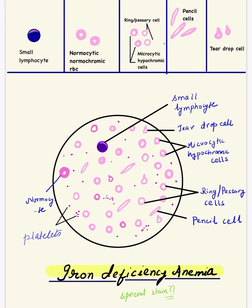This is how we draw the diagram of iron deficiency anemia on a peripheral blood smear. One special stain used to demonstrate the absence of iron stores in the bone marrow is the Perls Prussian blue stain. This stain will demonstrate the absence of iron in iron deficiency anemia, and it is very often asked in the viva.